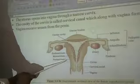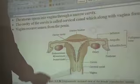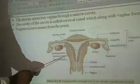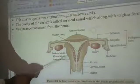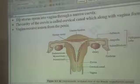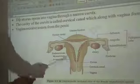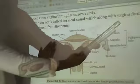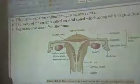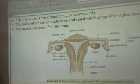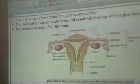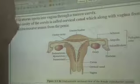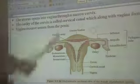The perimetrium is a thin layer. The myometrium is a thick layer mainly made of smooth muscles. During the delivery of a baby, the myometrium muscles are contracted, which leads to delivery of the baby — a process called parturition.